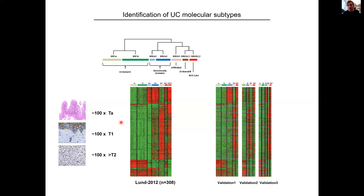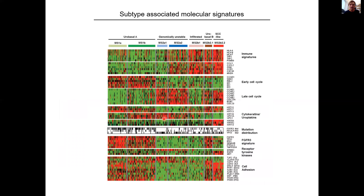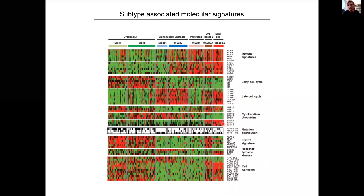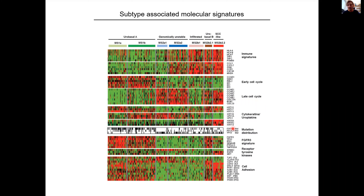We also downloaded and analyzed the three largest available datasets in the same clustering approach, confirming that these groups were not unique to our own data — though granularity differed. This was the first instance of a molecular subtype classification of bladder cancer. We performed extensive biological characterization including immune cell presence, cell cycle signatures, cytokeratin patterns, and Sanger sequencing of frequently mutated genes, showing that FGFR3 mutations occurred in urobasal subtypes and TP53 mutations in the genomically unstable and SCC-like subtypes.